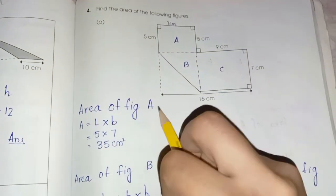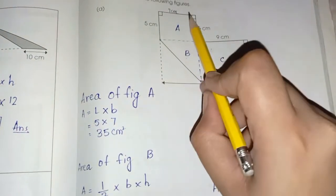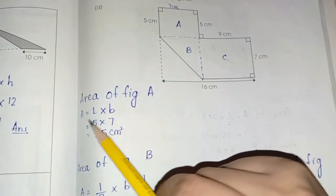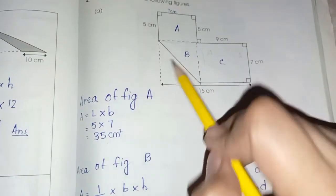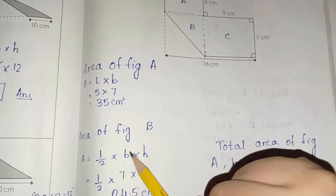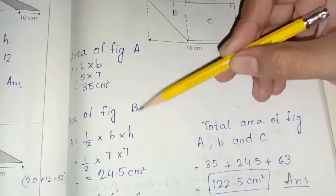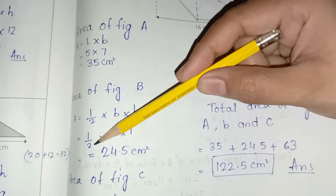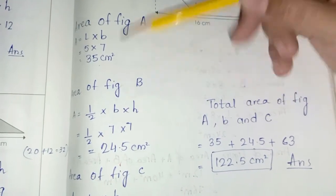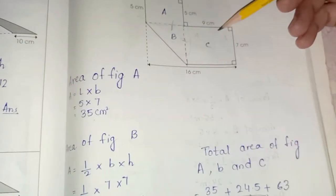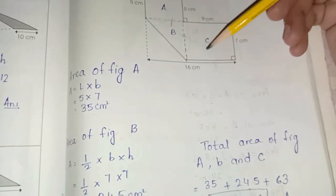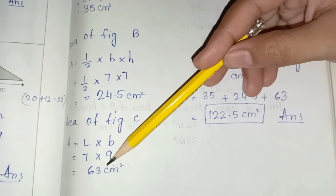Page number 133: we have to divide the shape into different areas A, B, and C, then find the area of each shape. Number A is a rectangle, so length multiplied by breadth gives the answer 35. Number B is a triangle, so half multiplied by breadth and height — breadth is 7 and height is 7, giving 49 divided by 2 equals 24.5. Figure C is also a rectangle with dimensions 7 and 9, giving 63.